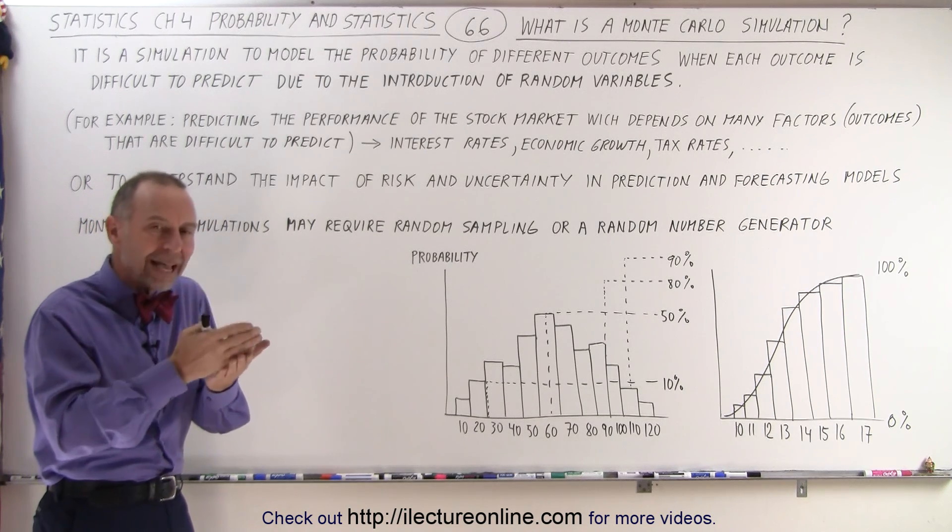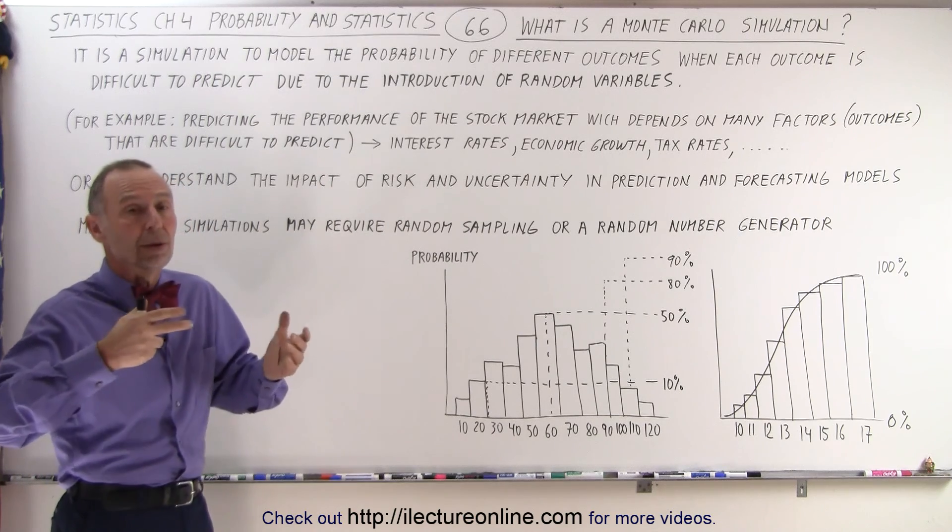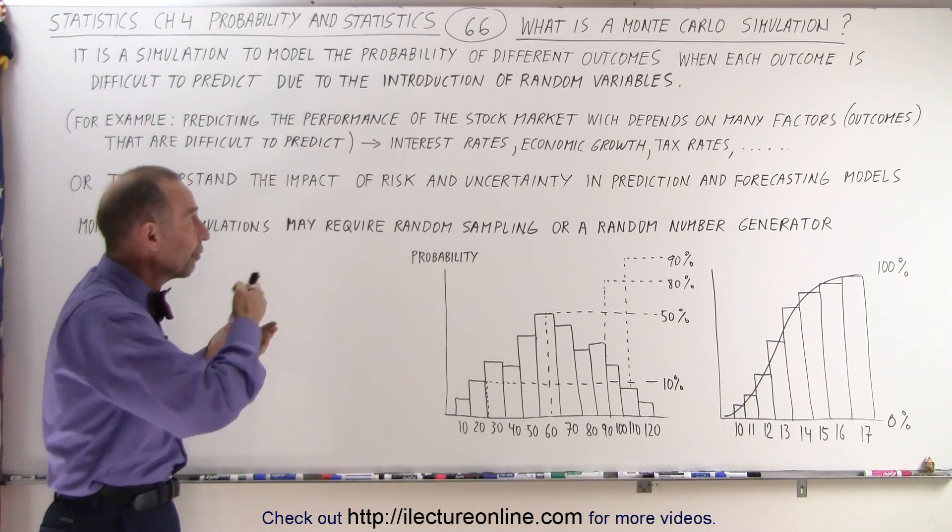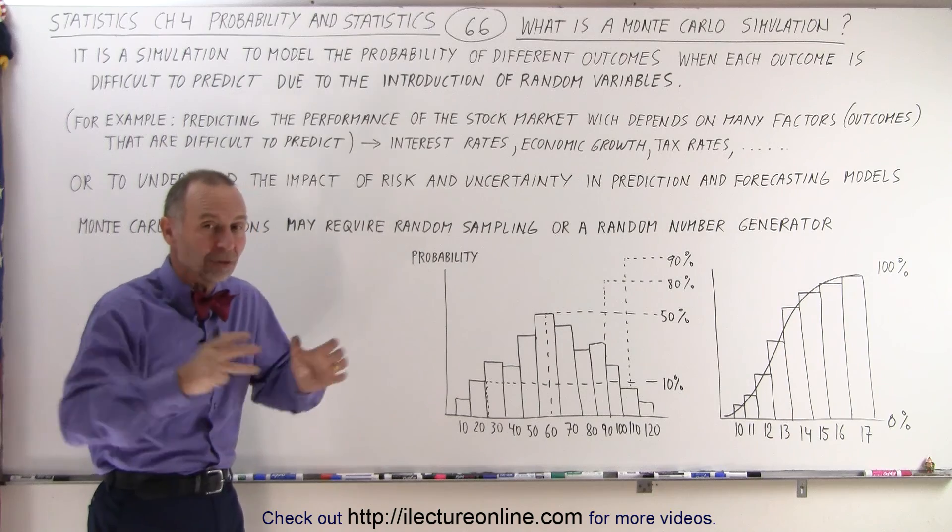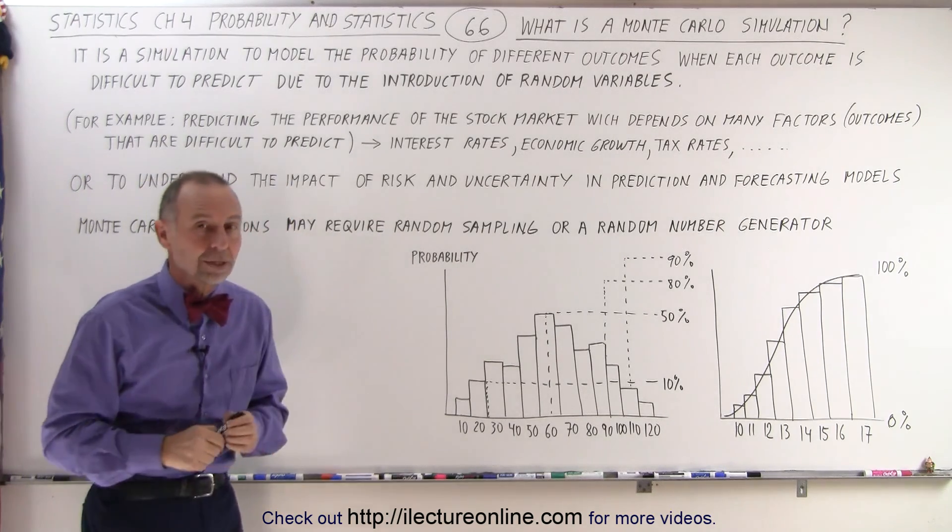So, we probably want to assign ranges of values to each of those and then somehow plug in possibilities for each of those particular outcomes, put it all together, and then we can predict what may happen with the stock market.